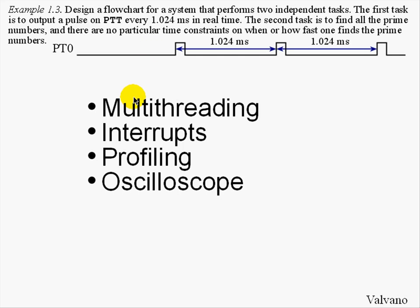There are four objectives of this example. They are multi-threading, which is executing more than one thread at a time; interrupts, which is a hardware-directed software action; profiling, which allows us to see what and when our program is executing; and an oscilloscope, which is a hardware tool used for debugging.